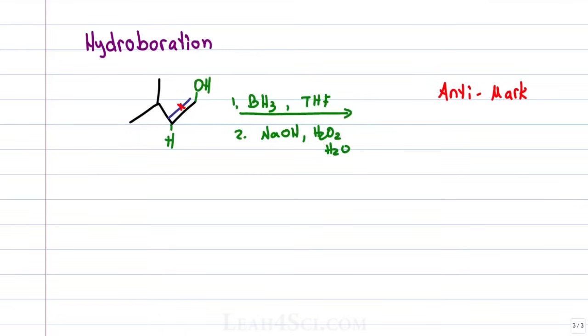However, they add to the same face of the pi bond making it a syn addition. That means if you're showing chirality the H and OH will both be dashes or both be wedges even though it's anti-Markovnikov so that the OH is on the less substituted carbon.